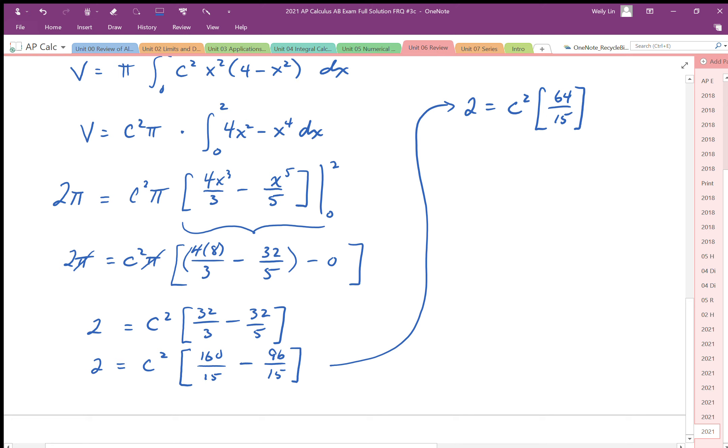When I solve for c, I multiply to the other side so I get 30/64 = c². Solving for c, I get √30/8, and so the c value is going to be √30/8.